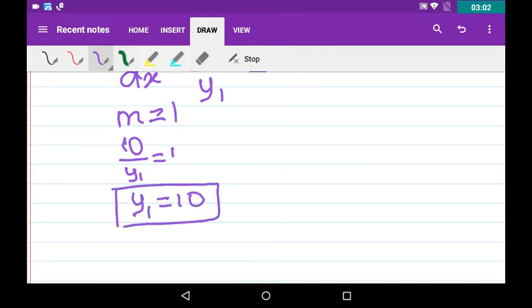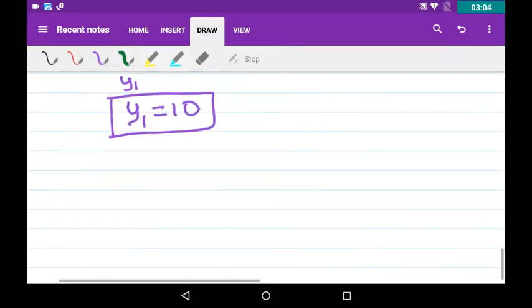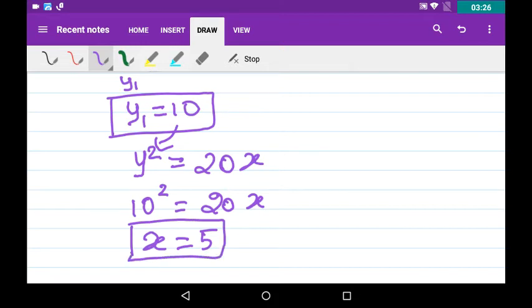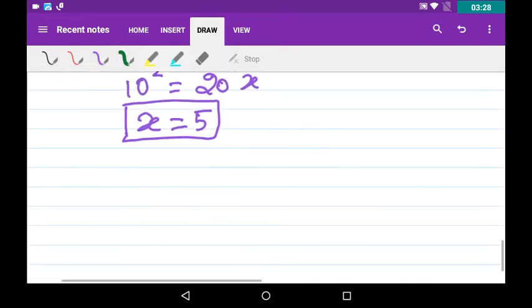We have found one point. To find another point, we have to substitute in the given parabola equation y² = 20x. x = 5. 100 divided by 20 is 5. You have found x₁ and y₁.